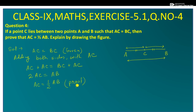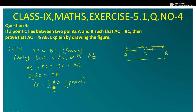फिर से एक बार देख लेते हैं: AC is equal to BC यह दिया हुआ है. हम दोनों साइड AC add करते हैं. AC plus AC is twice AC, और BC plus AC — BC और AC add करेंगे तो यह line AB मिलेगा. तो AC को लिख सकते हैं half of AB. This is proved.